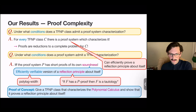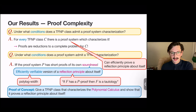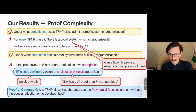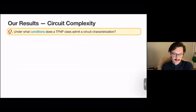We also show that the proof system constructed from any TFNP class can prove a reflection principle about itself. As a proof of concept, we give a TFNP class that characterizes the polynomial calculus — a natural DAG-like version of PPA or PPAD, depending on the field over which polynomial calculus is defined. We show that the polynomial calculus can prove one of these efficiently verifiable reflection principles about itself.